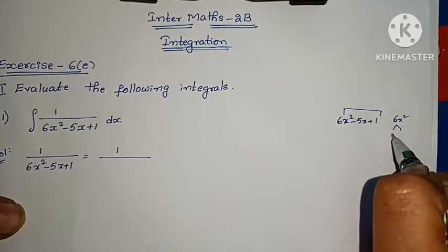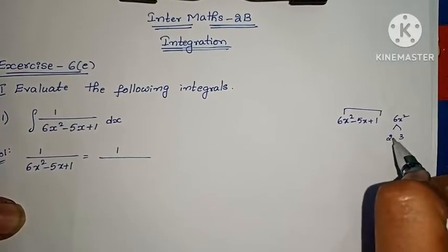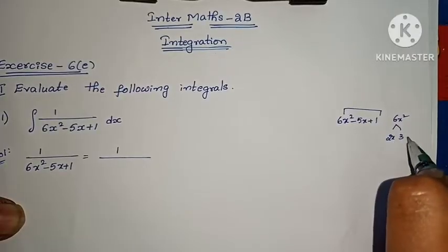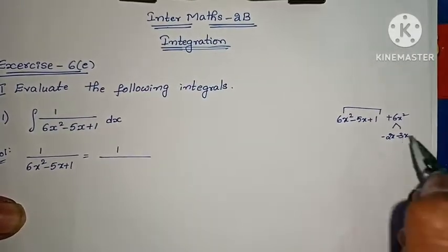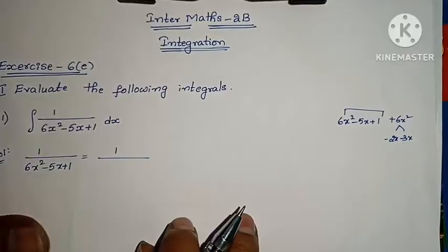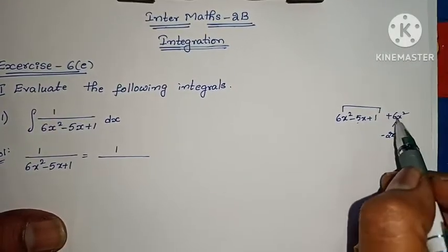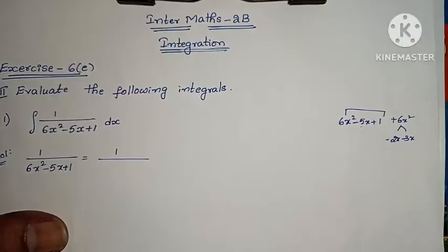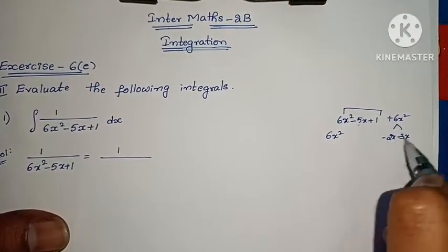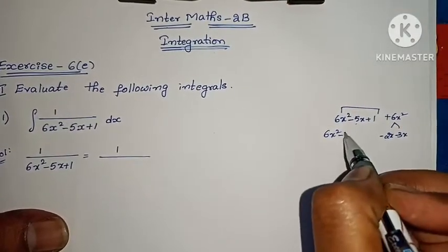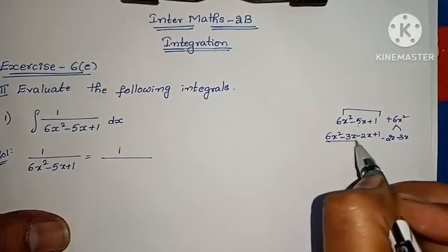6 ones are 6, so 2 threes are also 6. 2 threes are 6. 3 plus 2 gives 5, matching the middle term coefficient. Here we have a plus sign, but since we need minus, both factors get minus signs. Now add these two terms to replace the middle term: minus 3x minus 2x plus 1.